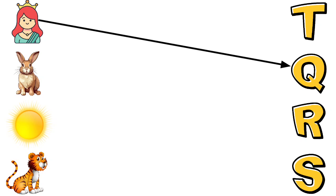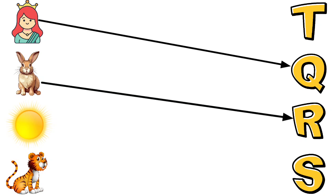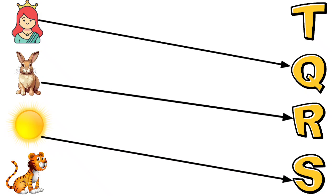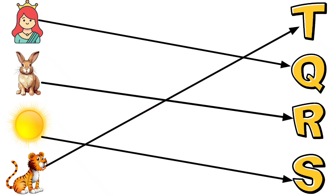Q for Queen, R for Rabbit, S for Sun, T for Tiger.